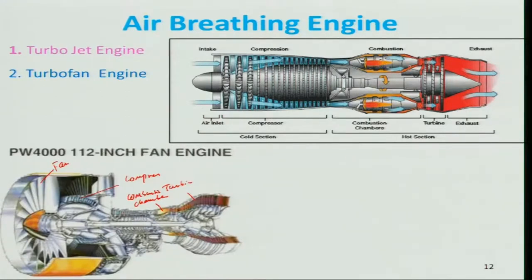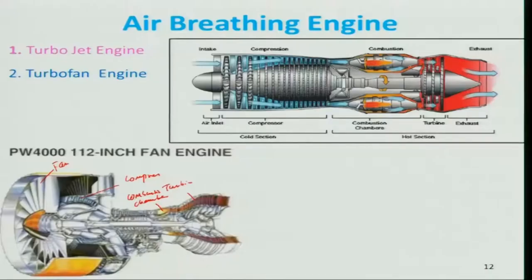In the turbine, the total pressure is lowered as work is extracted. Properties change in very drastic ways throughout the engine — temperature, pressure, and also the composition of the air, particularly when passing through the combustor. How to handle and analyze this is quite complex.